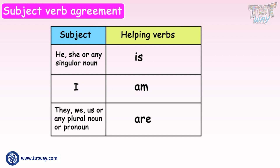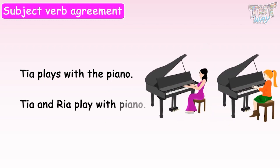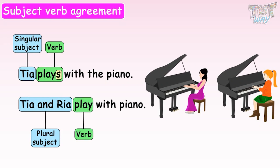Now let's learn about the verbs. Tia plays with the piano. Tia and Ria play with piano. So what do you see? When the subject is singular, that is Tia, we have put S after the verb — Tia plays. And when the subject is plural, that is Tia and Ria, we have not put S after the verb. So in all the sentences, subject and the verb must agree with each other.